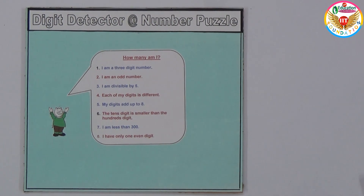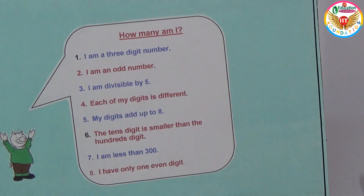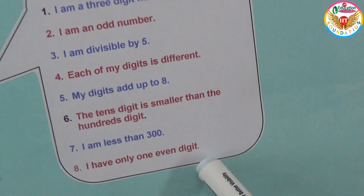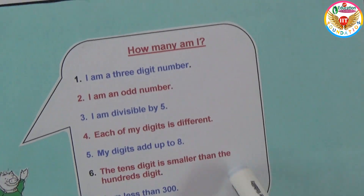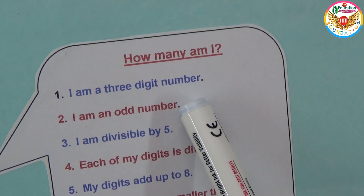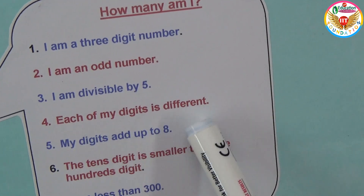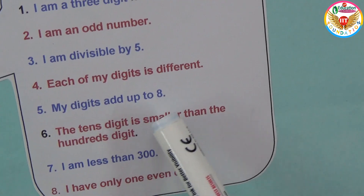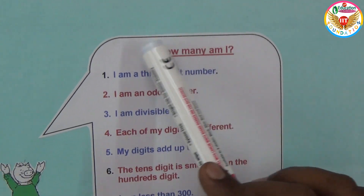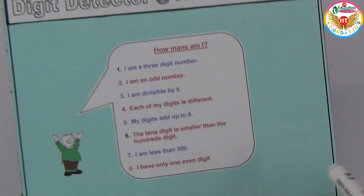Welcome to the educational channel. In this video, I present an interesting question — the digit detector. Based on these questions, you find out the number. There are eight questions and all eight have the same answer. The clues are: I am a three-digit number, I am an odd number, I should be divisible by 5, each of my digits is different, my digits add up to 8, the tens digit is smaller than the hundreds digit, I am less than 300, and I have only one even digit. Now let us solve this puzzle.